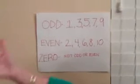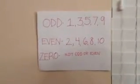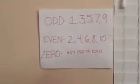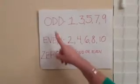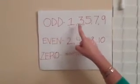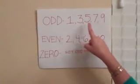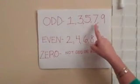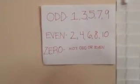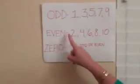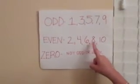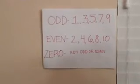In numbers 1 through 10, the odd numbers are 1, 3, 5, 7, and 9. The even numbers are 2, 4, 6, 8, and 10.